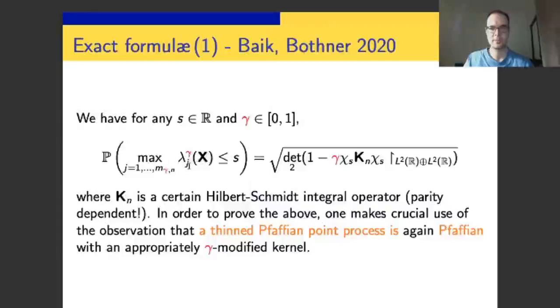You compute statistical properties of that process. First is the distribution function of the largest particle for finite n in the thinned process. Turns out it's the square root of a certain regularized operator determinant. How can you prove this identity? You prove a general result about a Pfaffian point process when they are thinned out. Turns out a thinning procedure preserves the integrability, which is to say that the thinned Pfaffian point process is still Pfaffian and there's a simple relation between the underlying correlation functions.